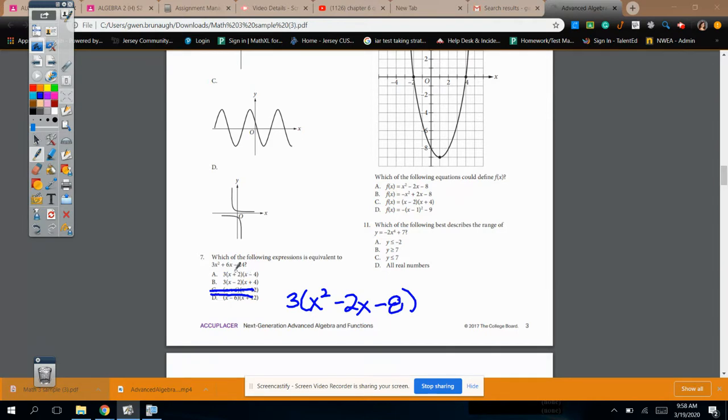That would be 3 times x squared minus 2x minus 8. That's from x times x is x squared minus 4x plus 2x, so it's a negative 2x minus 8. Distribute the 3, 3x squared. That would be a minus 6x. So a is out, which leaves b by default.